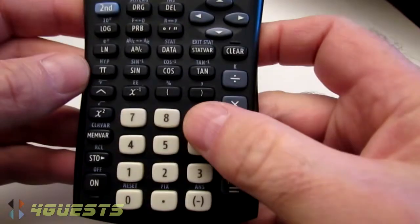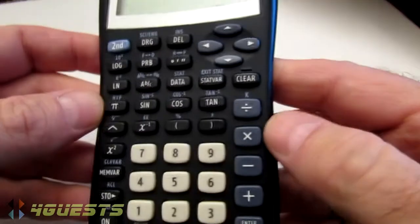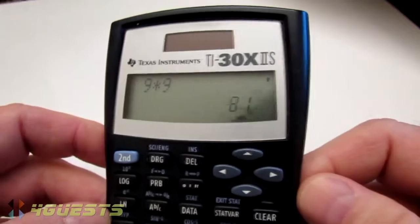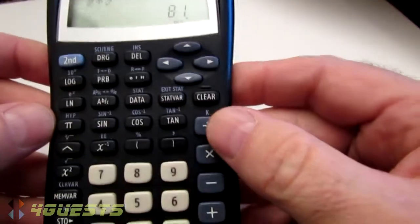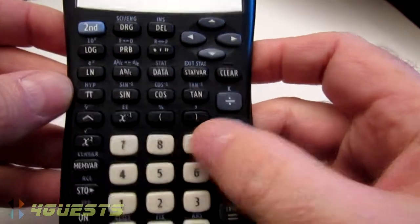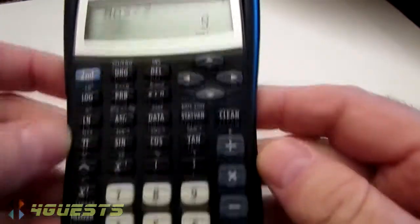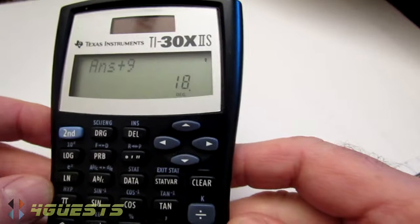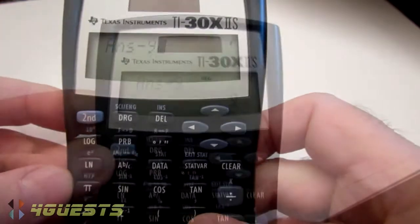Let's do some basic arithmetic. 9 times 9 equals 81. 81 divided by 9 equals 9. 9 plus 9 equals 18. 18 minus 9 equals 9.